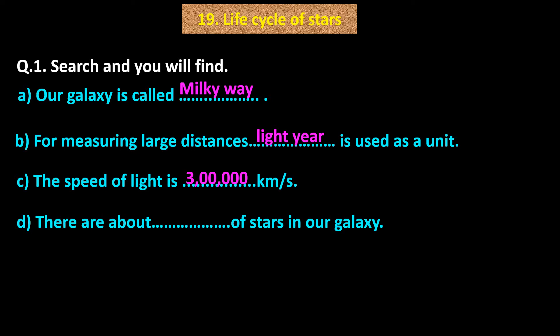D. There are about dash dash dash of stars in our galaxy. Answer: Billions. D. There are about billions of stars in our galaxy.